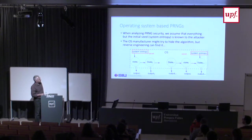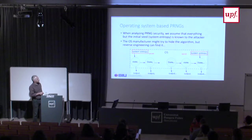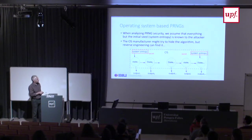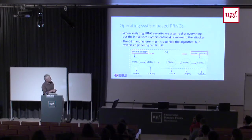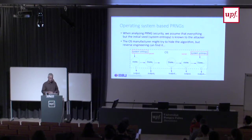When we analyze the security, we assume that everything is known — the adversary knows exactly what function is being implemented. The only thing we don't assume the adversary knows is the system entropy being input into the PRNG. The manufacturer might try to hide the function that advances the generator, but you can do reverse engineering. We managed to do that with a couple of students, so we must assume the function is known.